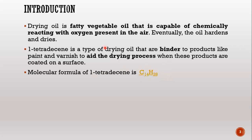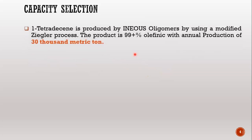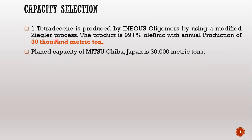The formula is 14H228. One tetradecane is a US oligomer. It is produced by using the modified Ziegler process, with 99% polyphenyl purity, with an annual production rate of 30,000 megatons.